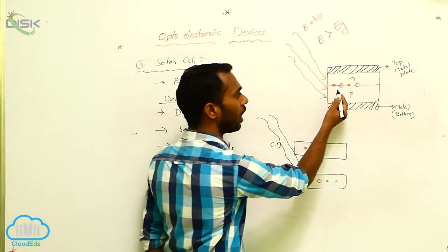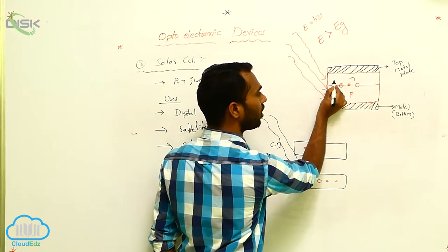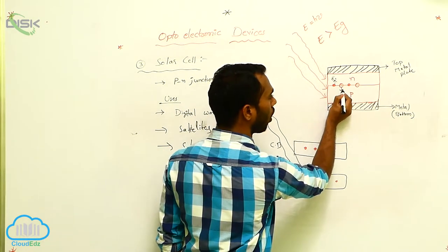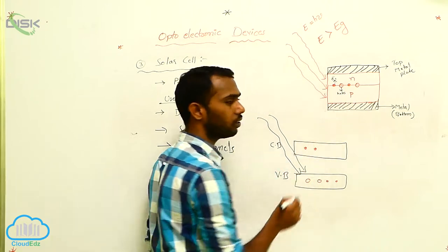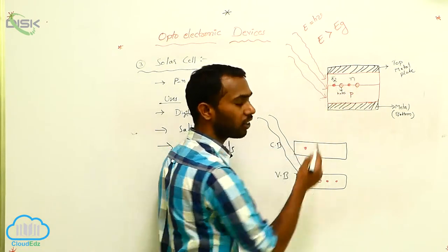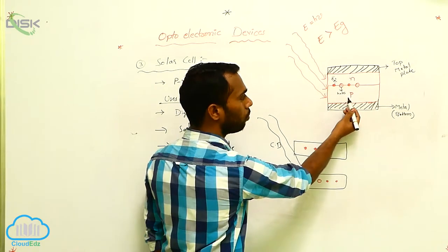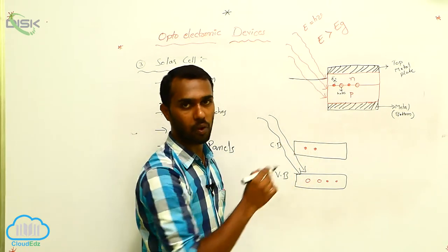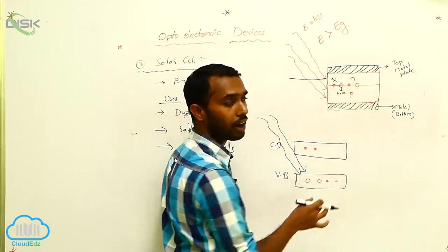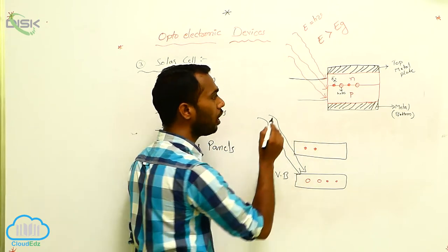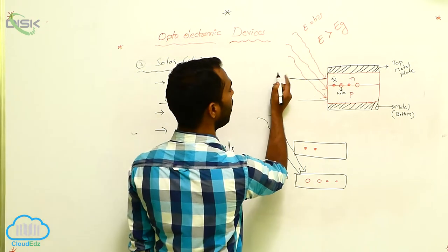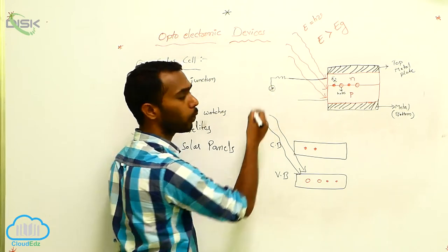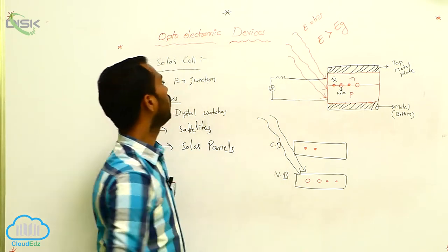These electrons move towards the N region, and holes always move towards the P region. Automatically, electron concentration increases at N and hole concentration increases at P, producing an EMF. The N region acts as the negative terminal and the lower P region as the positive terminal. Connecting a resistance produces some amount of current.